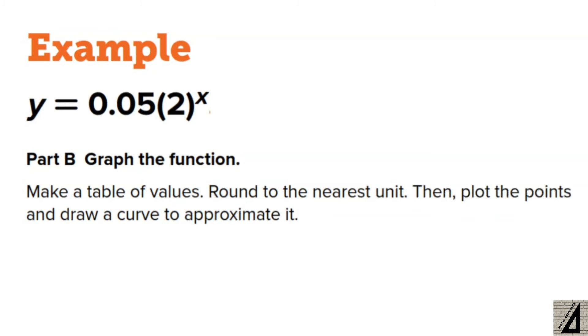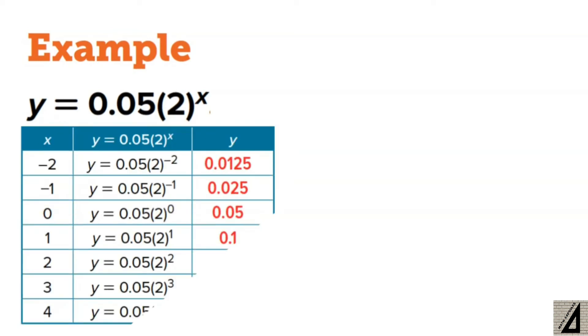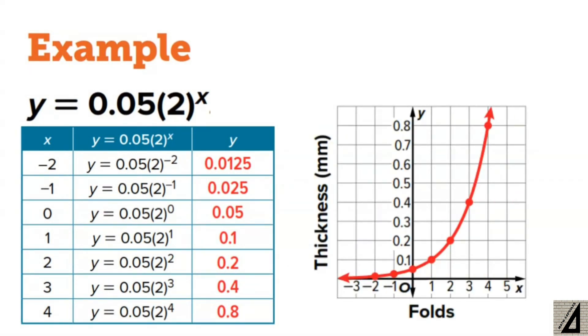Now to graph the function, we have to make a table of values and round to the nearest unit. Then plot the points and draw a curve to approximate it as follows. So here is the table of values for x and y. We find the values for x, we get any points like negative numbers, like negative 2, negative 1, and we take 0, of course, and we take two positive numbers. Then we substitute these values of x in the equation y equals 0.05 times 2 to the power x to find the values of y. After that, we plot the points for x and y on this graph. You will find the graph will look like this.